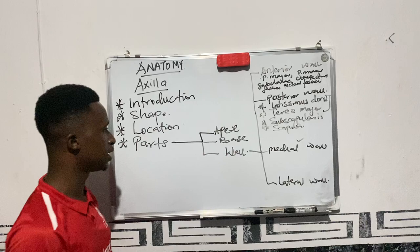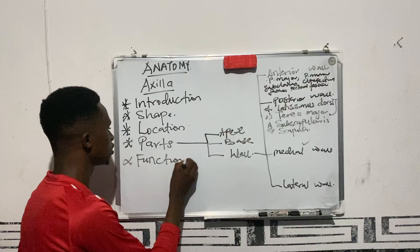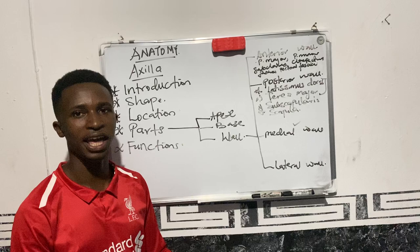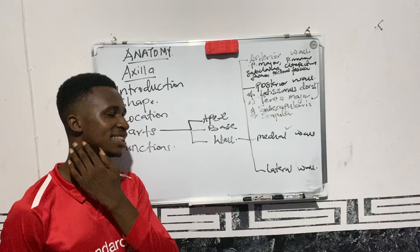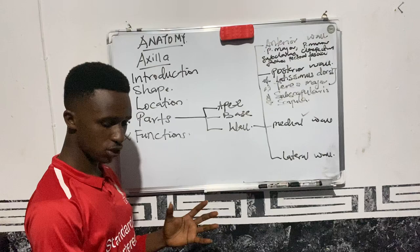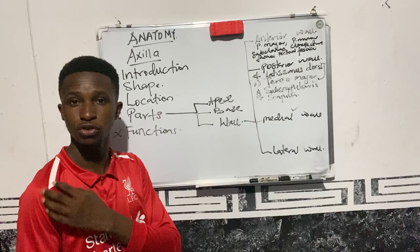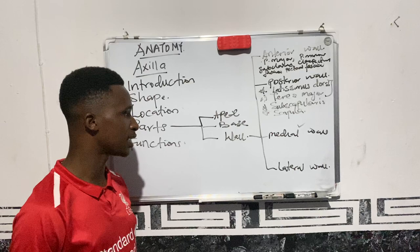After looking at the parts of the axilla, we need to discuss a little on the functions of the axilla. The main function of the axilla is that it serves as a passageway for the transmission of structures from the neck into the upper limb. There are some vessels that supply the upper limb and some nerves that give innervation to most of the upper limb, and they pass through the axilla in order to get to the upper limb.